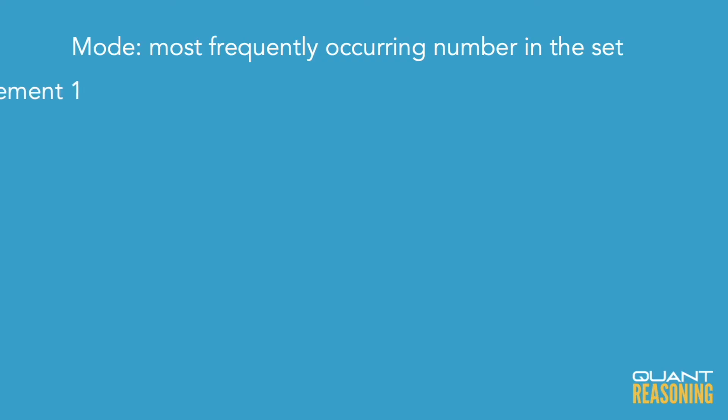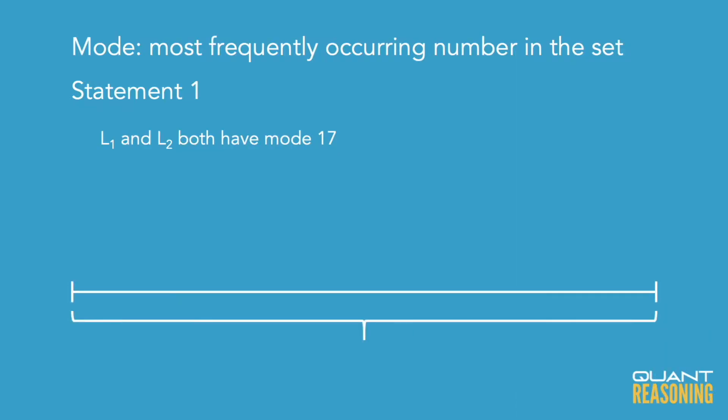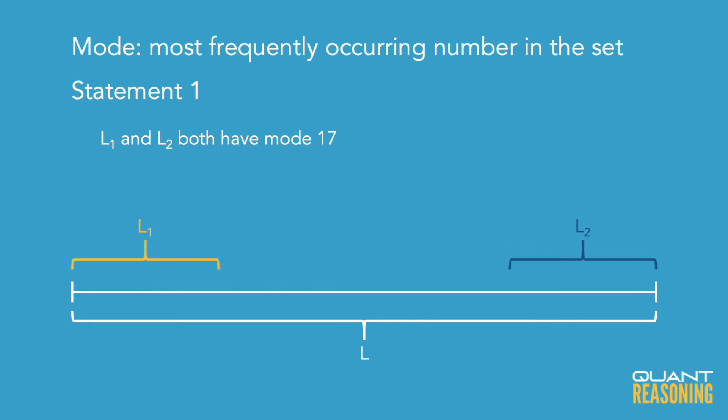Statement one is a really interesting one. It tells us that the mode of the first several numbers in the set, when arranged in ascending order, is 17, and also that the mode of the last several numbers in the set when arranged in ascending order is 17. That seems like a very interesting coincidence. I don't know whether these lists — the lower numbers and the higher numbers in the set — are overlapping or separate with more numbers in between.